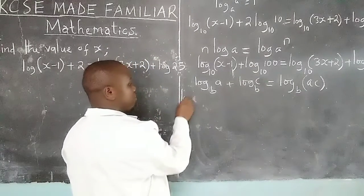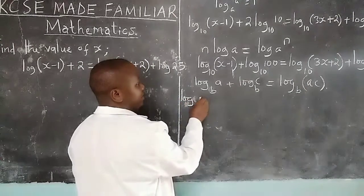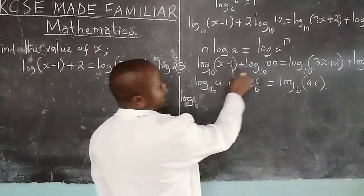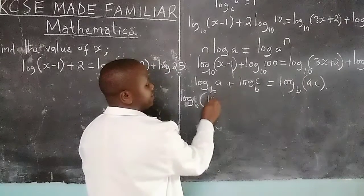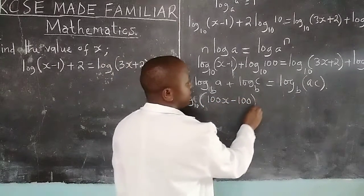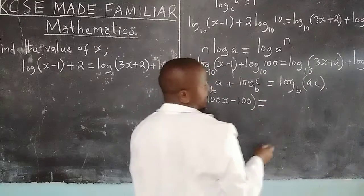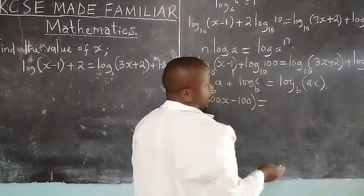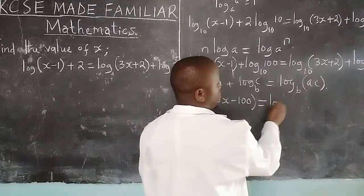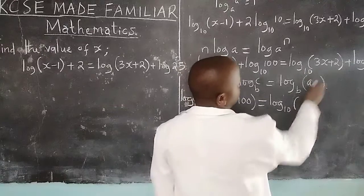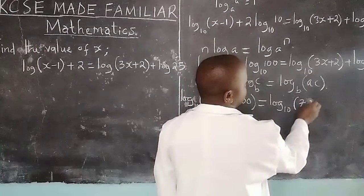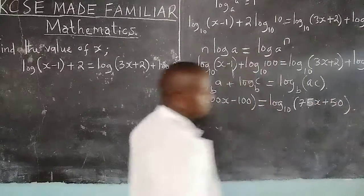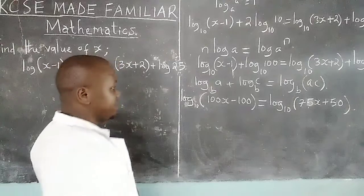So because of that, now we can have log₁₀ of (x-1) times 100, which will give us 100x - 100, equals to this side also, we multiply 25 times (3x+2), so that log₁₀(75x+50).